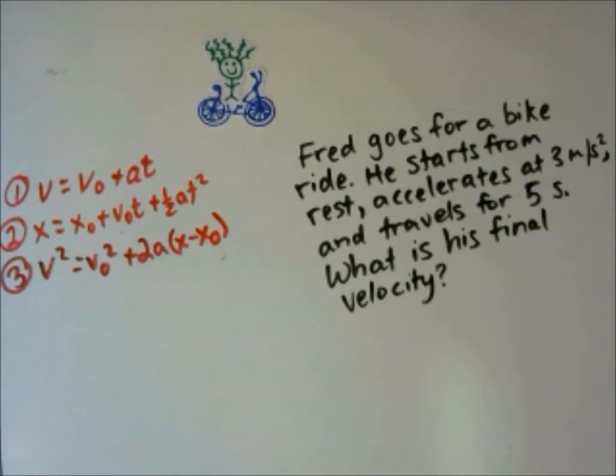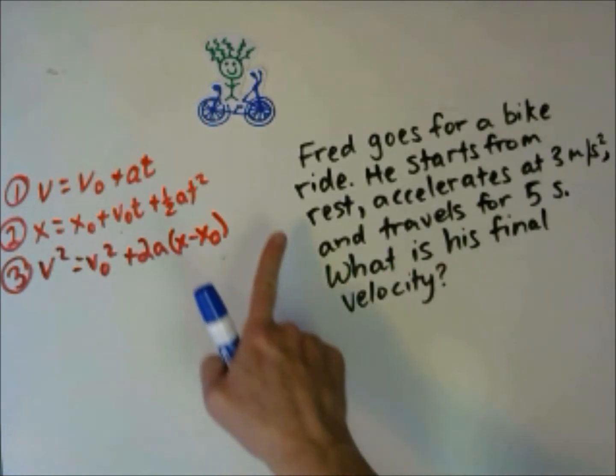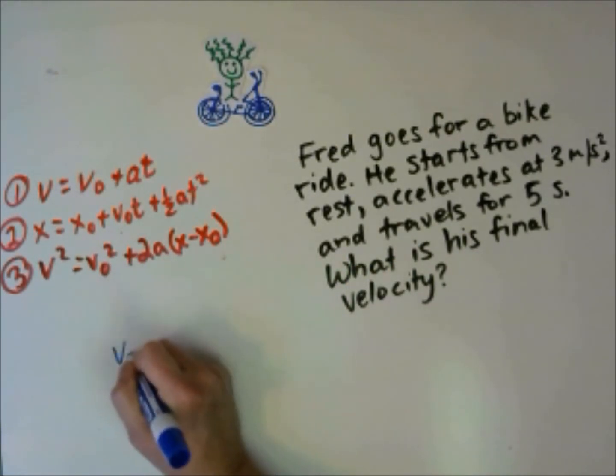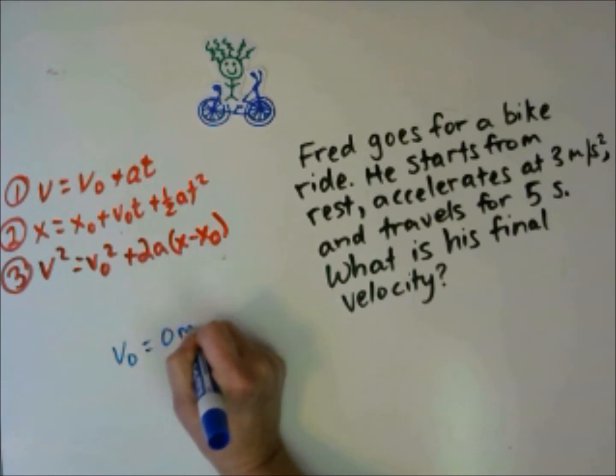Let's say Fred goes for a bike ride. He starts from rest, accelerates at 3 meters per second squared, and travels for 5 seconds. What is his final velocity? To solve this problem, we have to choose which of these equations to use. We do that first by listing what we know. He goes for a bike ride, he starts from rest.